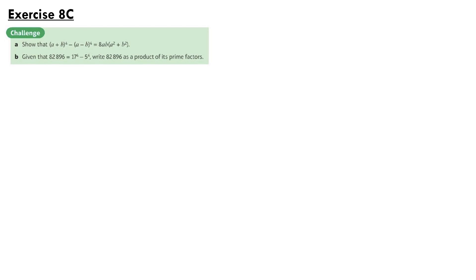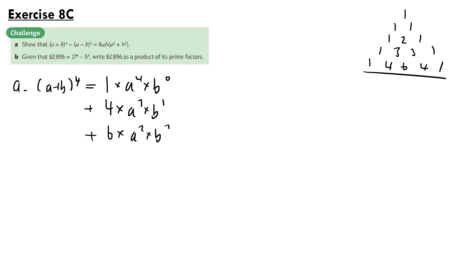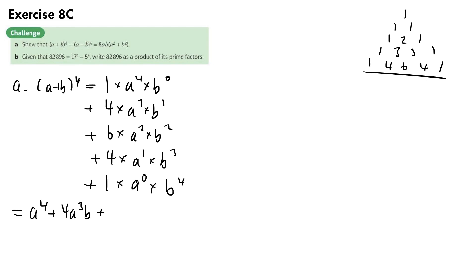For this question from Exercise 8c, part A says show that (a + b)⁴ minus (a - b)⁴ is equal to 8ab(a² + b²). Looking at Pascal's triangle, the row we need is 1, 4, 6, 4, 1. Expanding (a + b)⁴, we get A⁴ plus 4A³B plus 6A²B² plus 4AB³ plus B⁴.